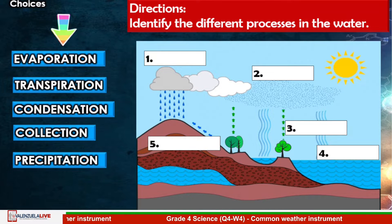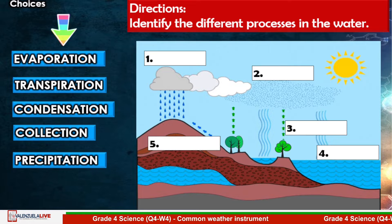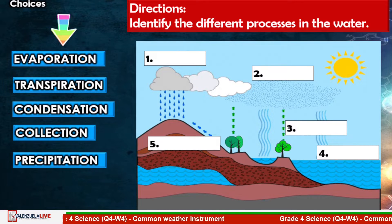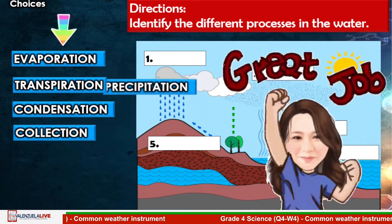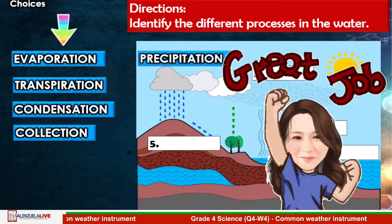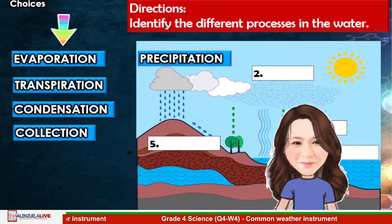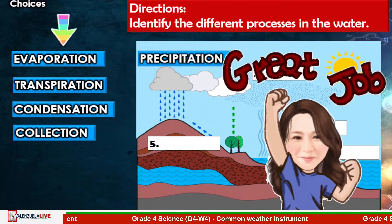Number one: Water is released from clouds in the form of rain, freezing rain, sleet, snow, or hail. Great job! The answer is Precipitation. Let's have number two.